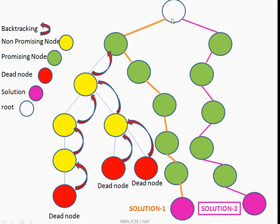Between the root node and the leaves, we have intermediate nodes at different levels — level one for the first choice, level two for the second choice, and so on. Based on whether the intermediate nodes lead us to a solution or to a dead end, they are categorized as promising nodes and non-promising nodes.